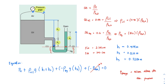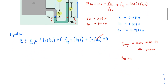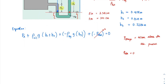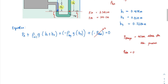Simplifying the full equation, we get: p_A + ρ_oil × g × (h1 + h2) − ρ_mercury × g × h3 = 0.